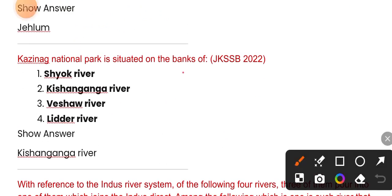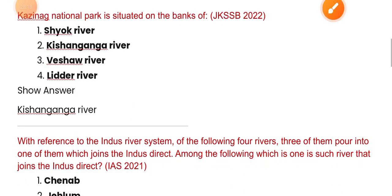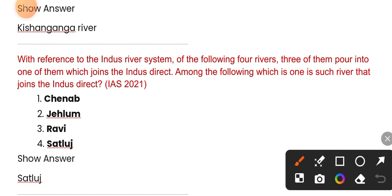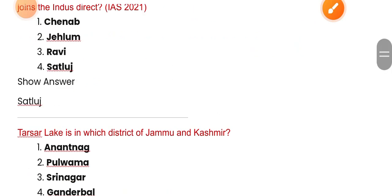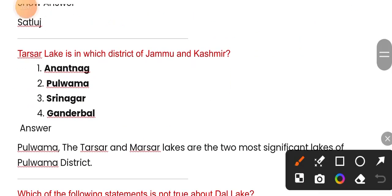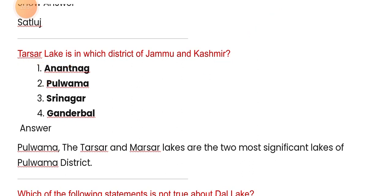Kaziranga National Park is situated on the banks of the Brahmaputra river. With reference to the Indus river system — of the following four rivers, three of them pour into one which joins the Indus directly. The Tarsar Lake is in Pulwama district of Jammu and Kashmir — option two.